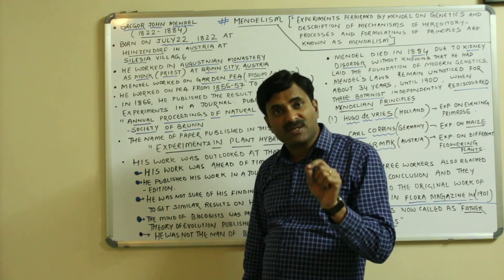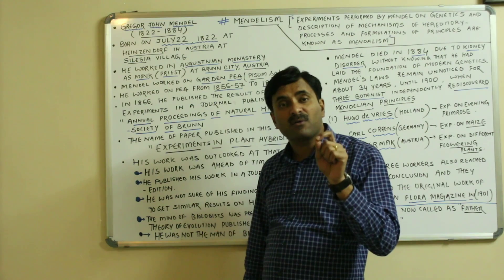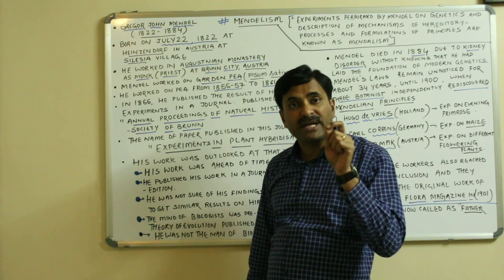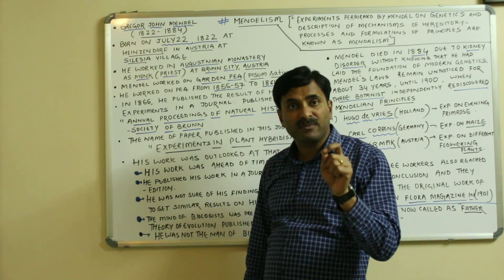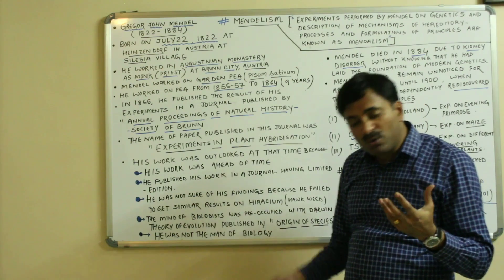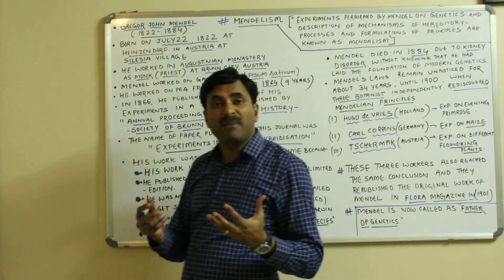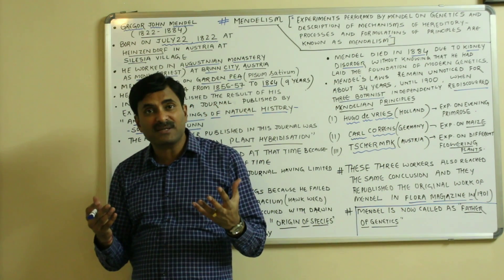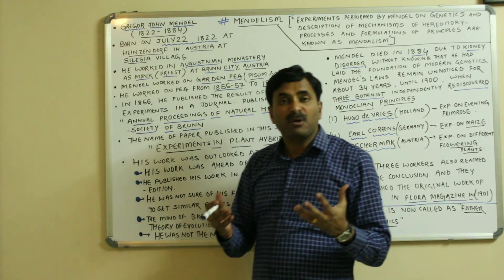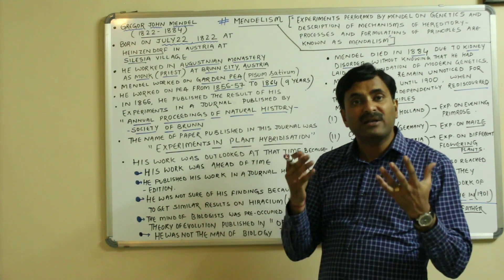Now, Mendel's work was published in the year 1866, but his work was not considered. His work has not gained popularity at that time. His work was not accepted by the biologists of that time. The question arises that today Mendel is called the father of genetics. He has done classical experiments of genetics, but what was the reason at that time that his work was overlooked?